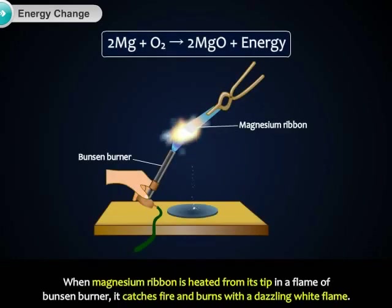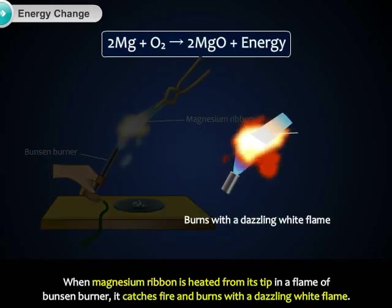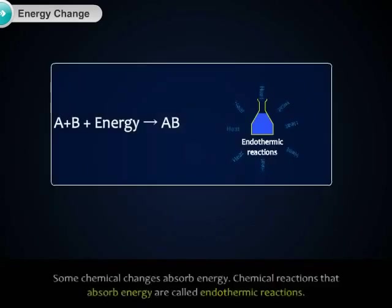When a magnesium ribbon is heated from its tip in a flame of Bunsen burner, it catches fire and burns with a dazzling white flame. Some chemical changes absorb energy.